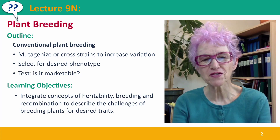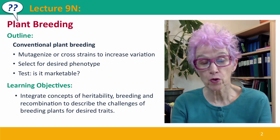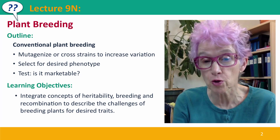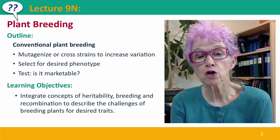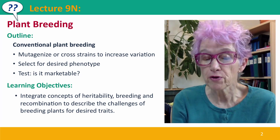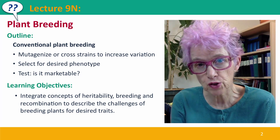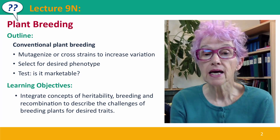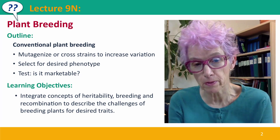Hi everyone, welcome back to Useful Genetics. This is lecture 9N, where we're going to talk about plant breeding — in this case conventional plant breeding, not genetically modified organism breeding. We'll talk about the factors that have to be considered before undertaking a breeding program, about how breeding programs work, the costs of them, and the ultimate test: is the new strain marketable?